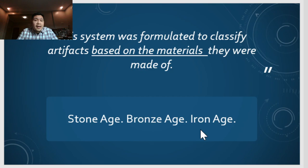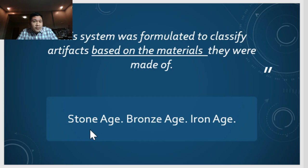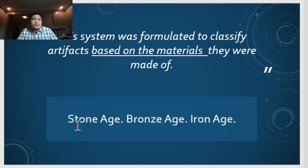Going back to what Christian Jurgensen Thompson said, it is categorized based on the materials. The most common materials used during the Stone Age was, of course, stone — that's why it's called the Stone Age. Then we have the Bronze Age where the material used was bronze, and for the Iron Age, the material used was iron.